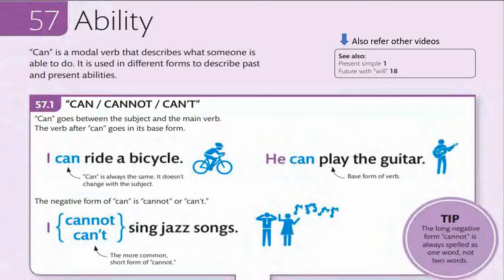The modal used for ability is 'can'. 'Can' is a modal verb that describes what someone is able to do. It is used in different forms to describe past and present abilities. Make a note of it: past and present only. It cannot be used for future — it is used for past and present abilities only.